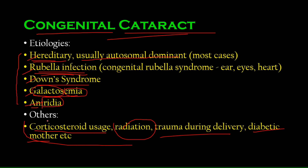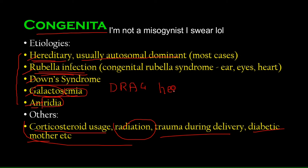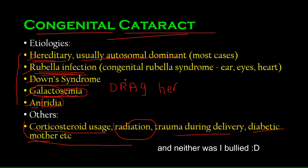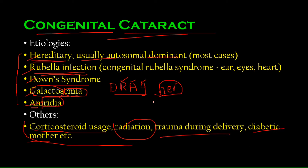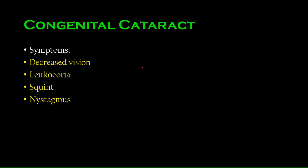A mnemonic to remember the five main causes: DRAG HER. D for Down syndrome, R for Rubella, A for Aniridia, G for Galactosemia, HER for Hereditary. Mnemonics are supposed to be silly — silly things are easier to remember.